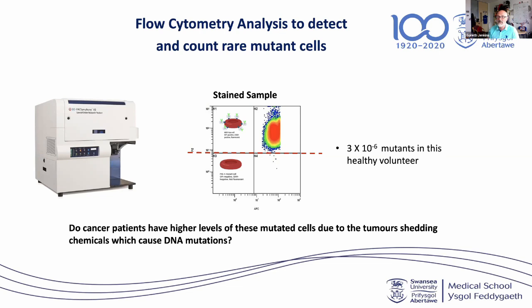In this flow cytometry graph, the densely saturated cluster represents millions of normal, highly fluorescent cells. We're interested in the rare mutated cells — the 'naked' cells that have lost their surface markers. In this healthy volunteer sample, there were just three mutated cells per million normal cells. We then asked whether secondary mutations induced by tumors would result in more of these mutated cells in cancer patients compared to healthy volunteers — and we carried out a study to answer that question.